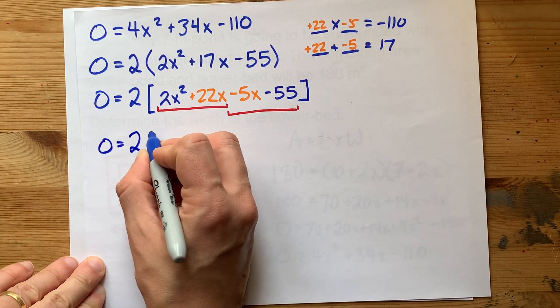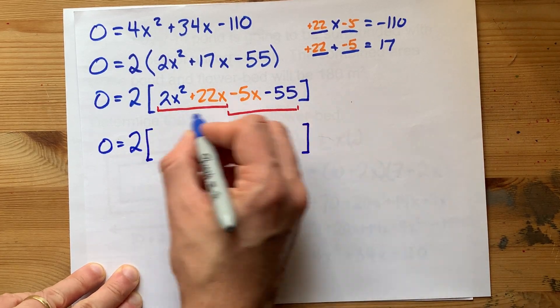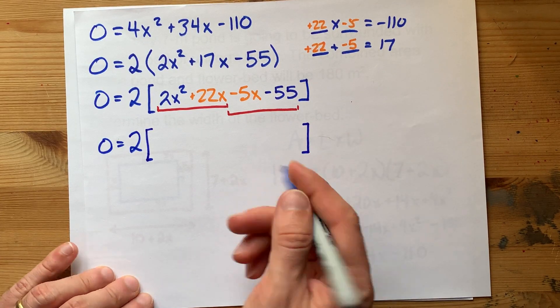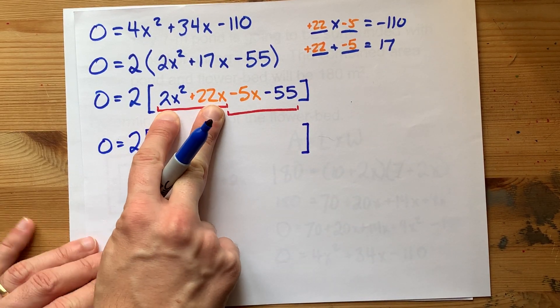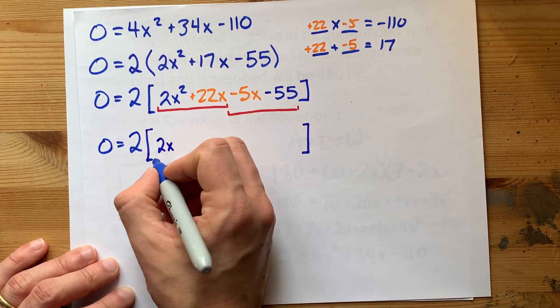I've still got a 2 out front. And I'm using square brackets because I know I'm going to need round brackets here. That's just me though. You can use big round brackets here if you want.